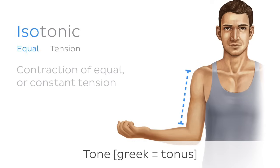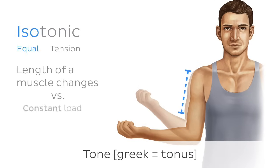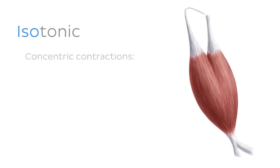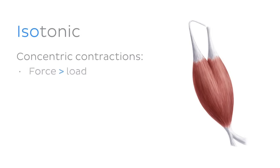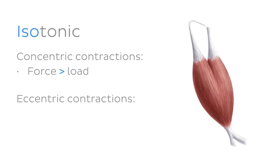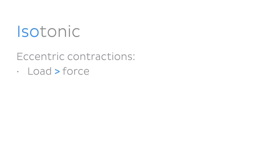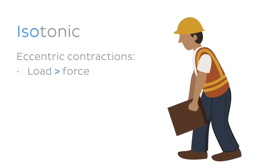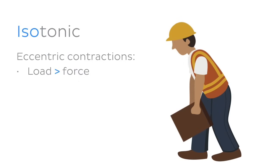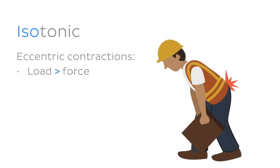This is where the length of a muscle changes against a constant load. Isotonic contractions can be separated into two types. Concentric contractions, where the muscle shortens due to the force of contraction being greater than the load placed upon it. Eccentric contractions, on the other hand, occur when the load is greater than the force of contraction — this causes the muscle to lengthen instead. So even though the muscle is getting longer, it is still contracting. You'll see this when carefully lowering a heavy load; without it, the load would quickly drop to the floor, causing injury.